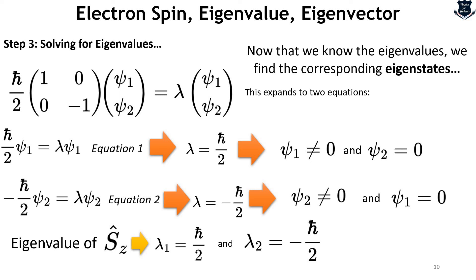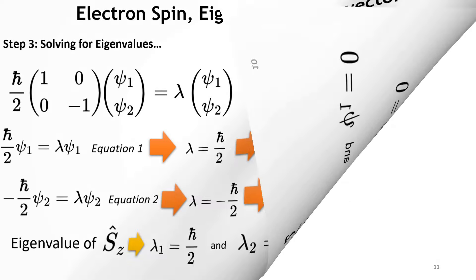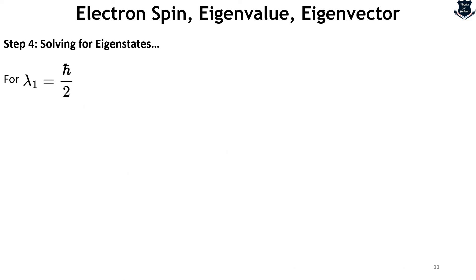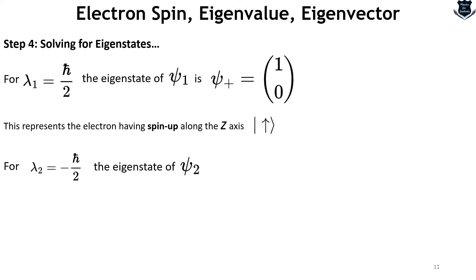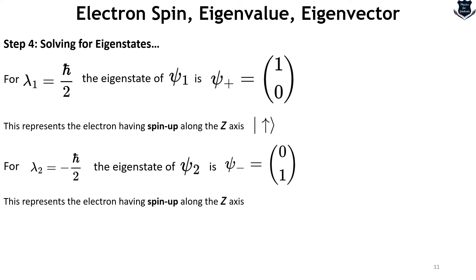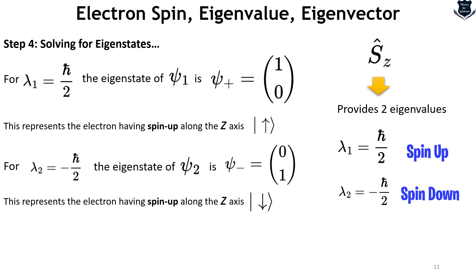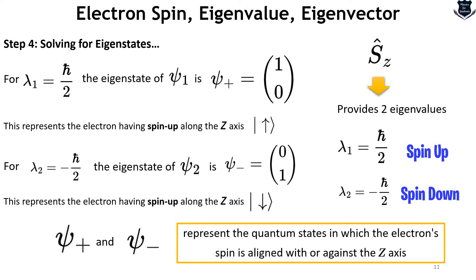So we have found the eigenvalues of the operator S_z: there are two eigenvalues, one is plus ℏ/2 and another is minus ℏ/2. Now that we know the eigenvalues we can easily compute the eigenstates. For the first positive eigenvalue, the eigenstate psi_1 would be (1, 0) — this represents the electron having spin up along the Z axis. For lambda_2 which is negative, the eigenstate for psi_2 would be (0, 1), and this represents the spin down along the Z axis. So S_z has two eigenvalues representing spin up and spin down, and psi_plus and psi_minus represent the quantum state in which the electron spin is aligned with or against the Z axis.